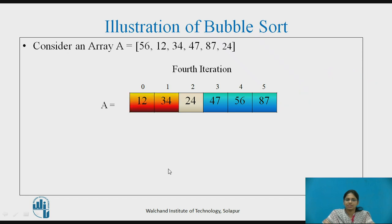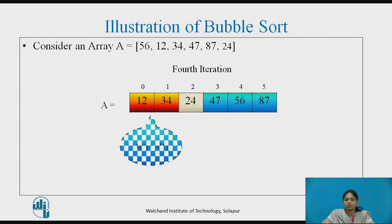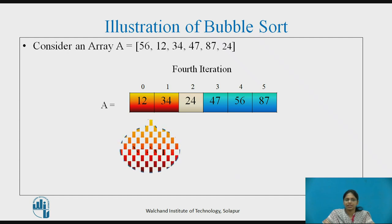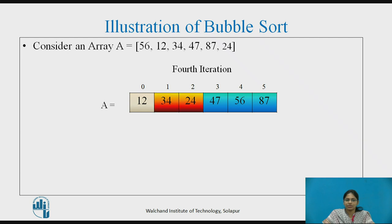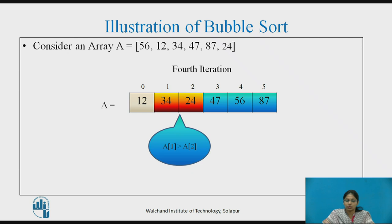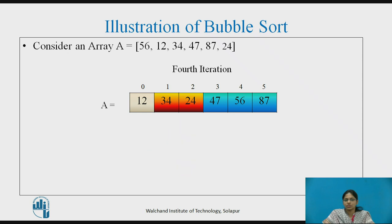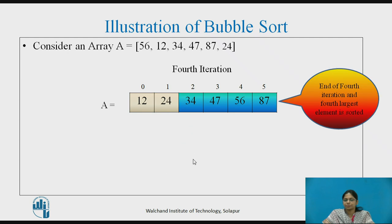In the fourth iteration, the comparison again begins from the very beginning. A[0] is lesser than A[1], so no swapping is done. The comparison is then done between the next two elements and A[1] is greater than A[2], so swapping is needed. After swapping, 34 is placed at A[2]. At the end of the fourth iteration, the fourth largest element is also sorted.